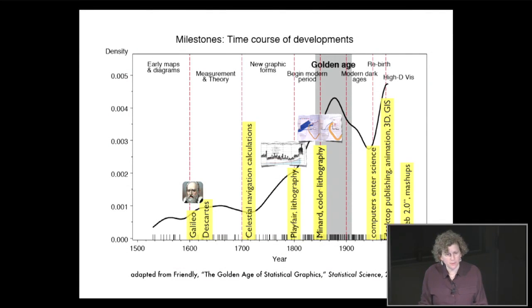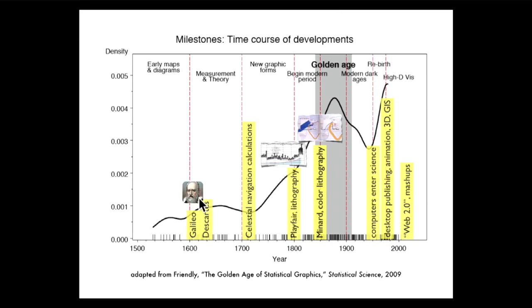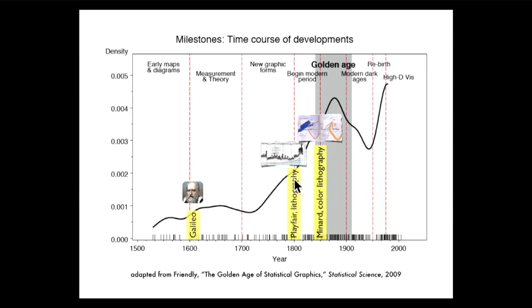So that's where we've come in 400 years. Here's Galileo in 1610, and all sorts of other interesting things happened along the way. This is a plot of the density of important developments in graphics and visualization as a function of time. I'll just focus on what happened in the 1800s, when two giants — Playfair, who invented what we would call statistical graphics today, and Menard, who invented what a lot of people would call information visualization — lived and worked as engineers and draftsmen in the 19th century.